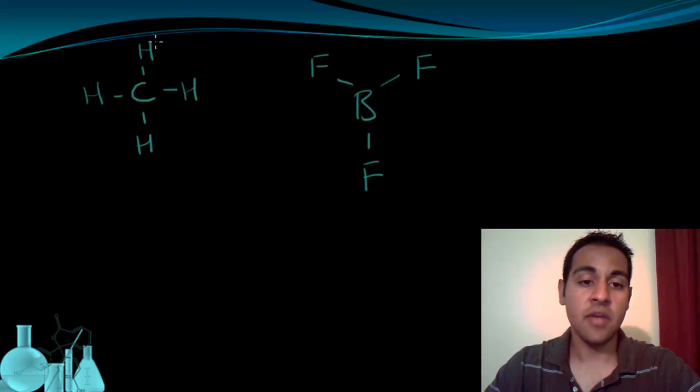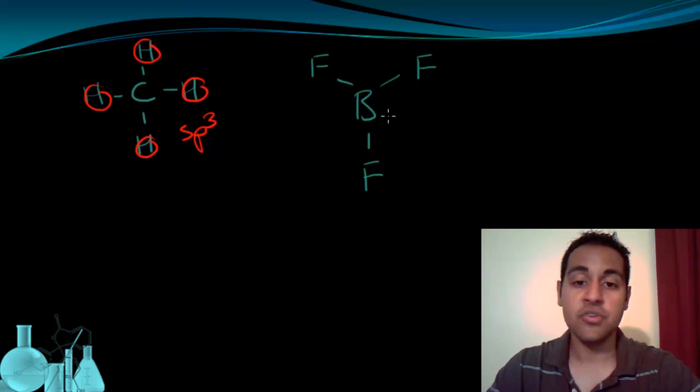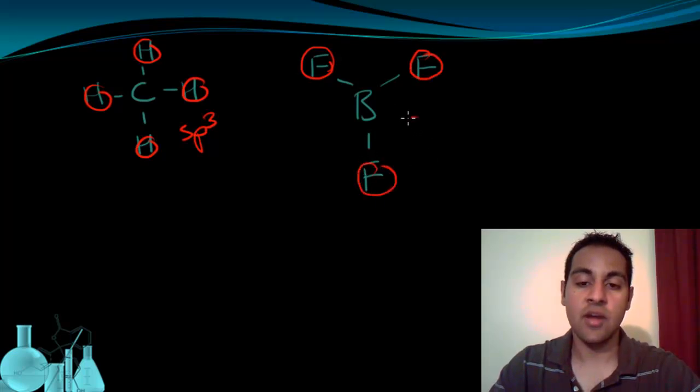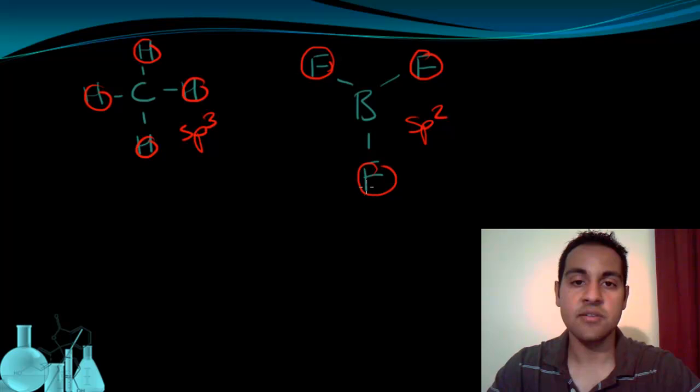So what does this look like? For methane, we have these four hydrogens bonded to it. And here's how I'm going to count them. S, P, 2, 3. So this is sp3 hybridized. For boron trifluoride, there are three fluorine atoms and no lone pairs that I need to count. So I'm going to count sp2. So my hybridization is sp2 hybridized. Let's look at some more examples.